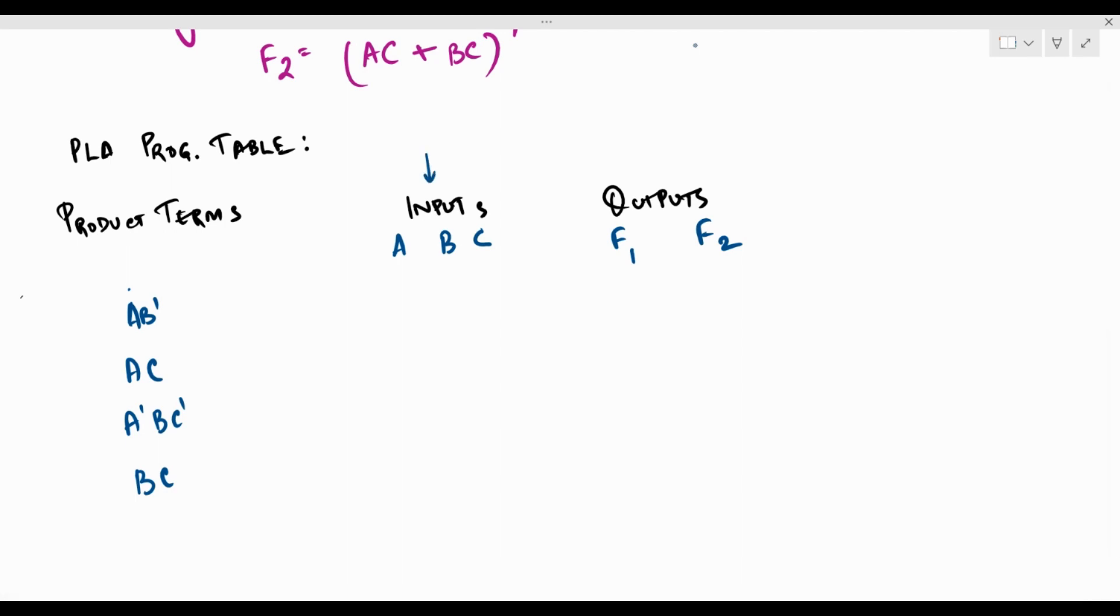Now how do we fill up the other two columns? Looking at the input column, the product term has the literal A and the literal B dash. It does not have the literal C. So we're going to put a 1 under A, meaning that the literal A is present in the product term. We're going to put a 0 under B, meaning it is B dash. And since C is not there, we're going to just put a dash. Similarly, 1 dash 1 would be for AC. 0, 1, 0 will be for A dash BC dash. And dash 1, 1 will be for BC.